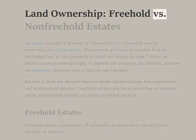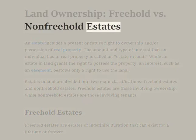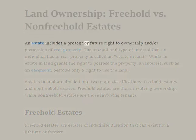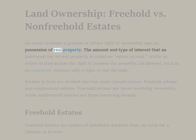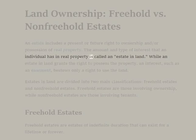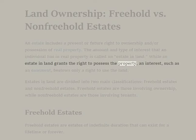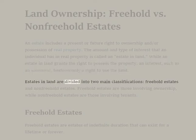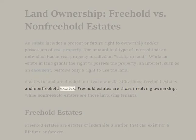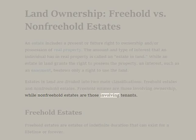Land Ownership: Freehold vs. Non-Freehold Estates. An estate includes a present or future right to ownership and/or possession of real property. The amount and type of interest that an individual has in real property is called an estate in land. While an estate in land grants the right to possess the property, an interest such as an easement bestows only a right to use the land. Estates in land are divided into two main classifications: freehold estates and non-freehold estates. Freehold estates are those involving ownership, while non-freehold estates are those involving tenants.